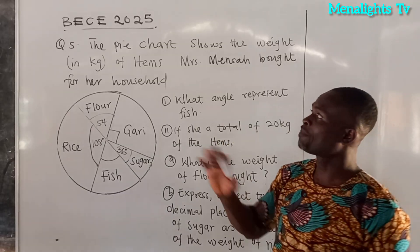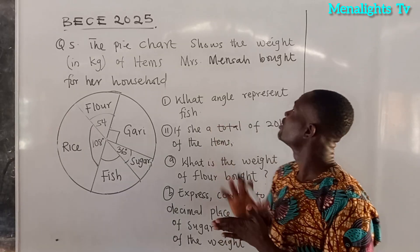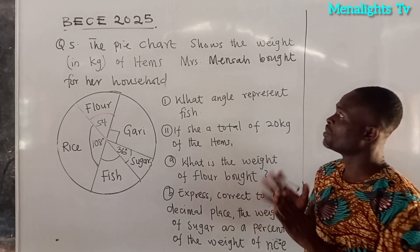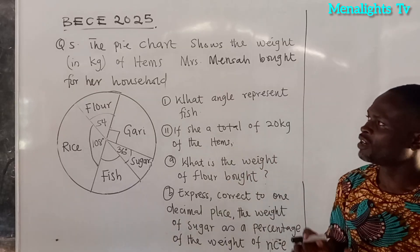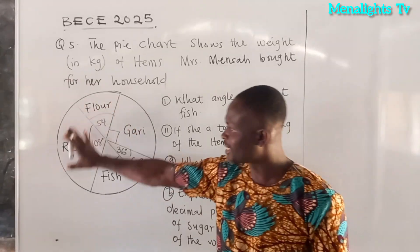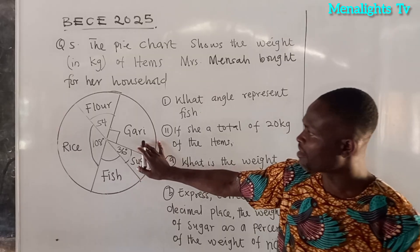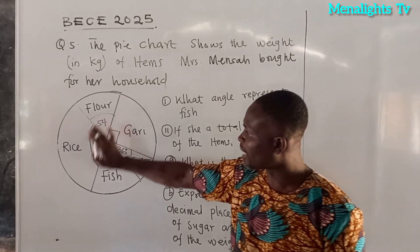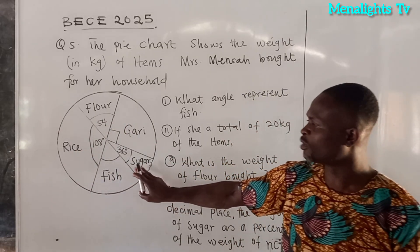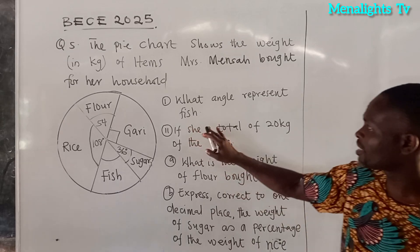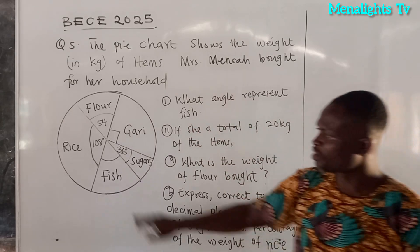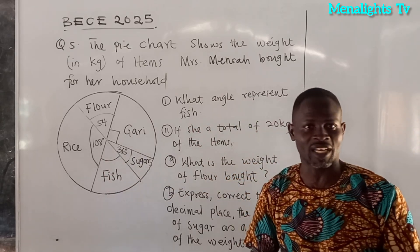Question number 5 says: the pie chart shows the weight in kilograms of items Mrs. Mensa bought for her household. So this is the pie chart that we have. We have garlic, flour, rice, fish, and sugar. The first question says: what angle represents fish? When you look at fish here, there is no angle value given.